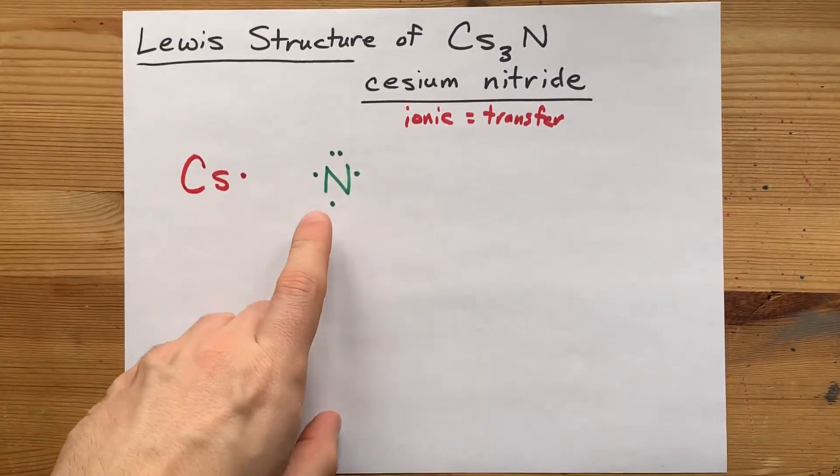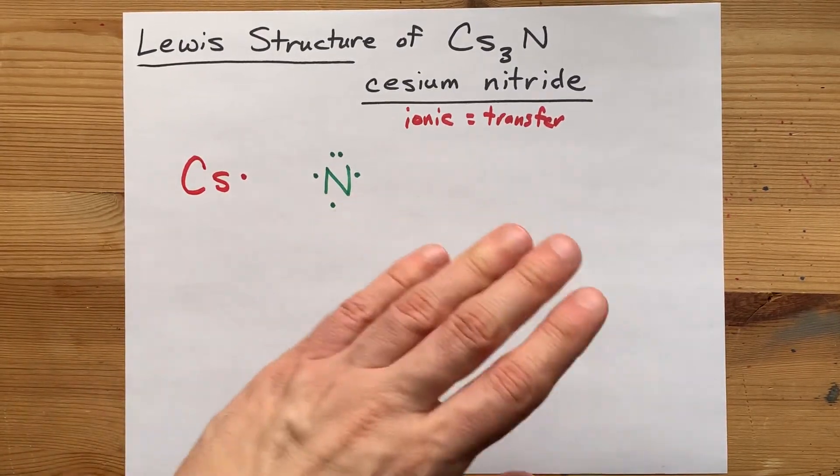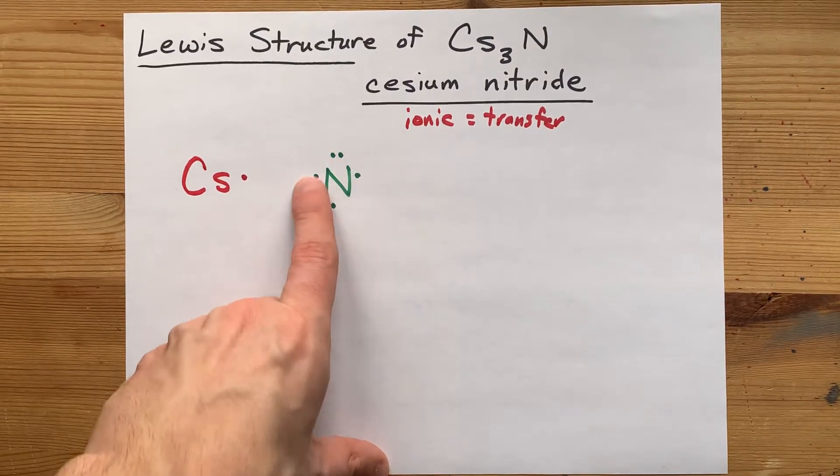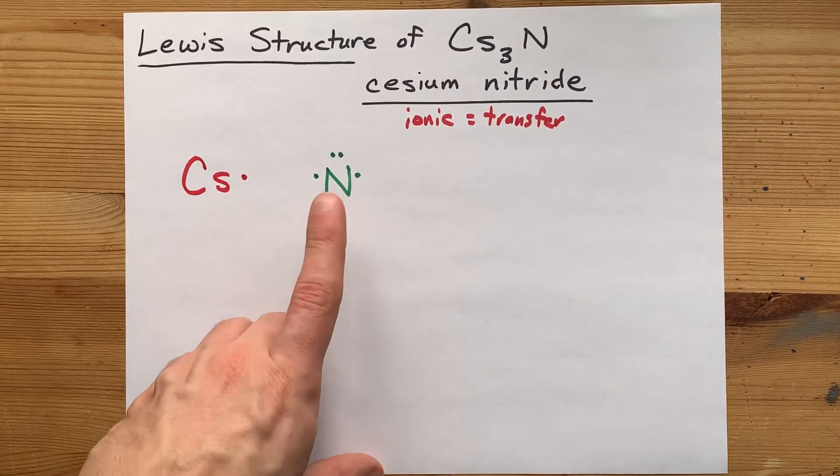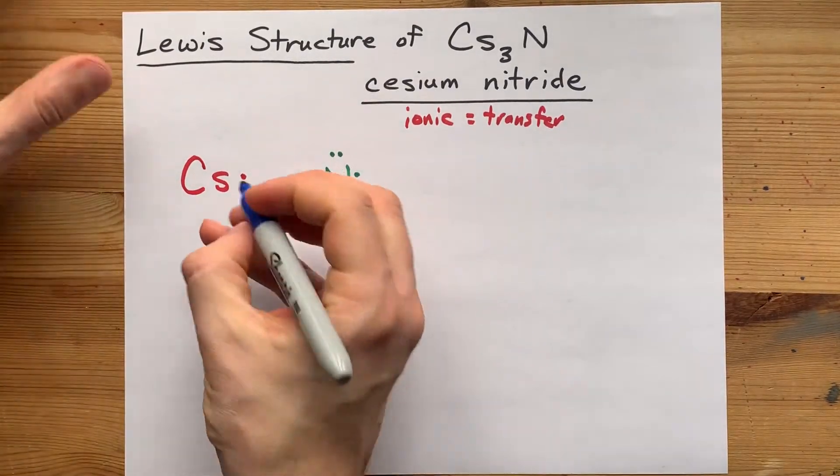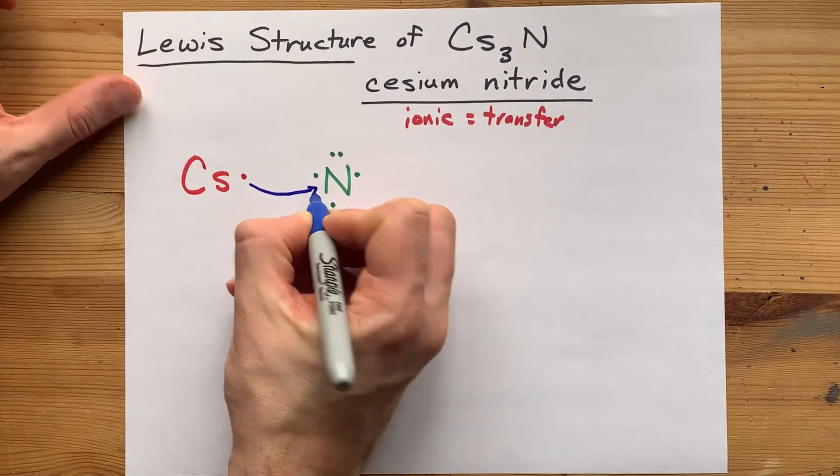Now the other key bit is that non-metals, other than hydrogen, want eight electrons in their outer shell to be stable. And they can steal electrons away from metals. So this cesium gives its electron away to nitrogen.